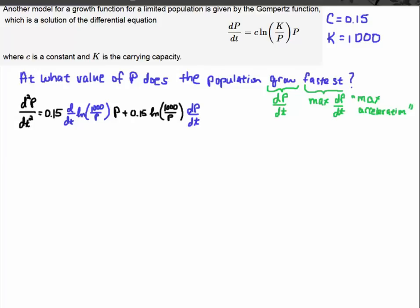Or the max change in the population occurs. So the first thing I do is I differentiate this equation again, so I'm going to find the inflection point. The max of the derivative is an inflection point. So I have to take the second derivative and set it equal to zero. So I differentiate this Gompertz function.